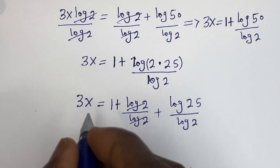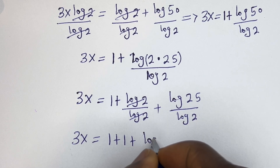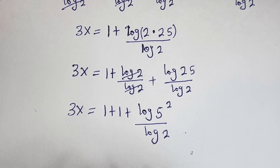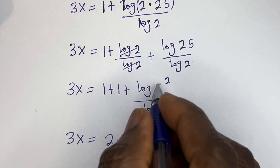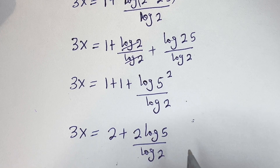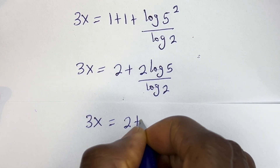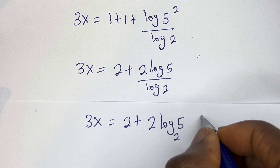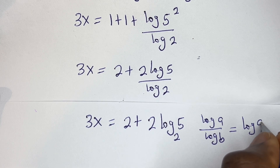This simplifies so that 3x is equal to 1 plus 1 plus 2·log 5 over log 2, which is 2 plus 2·log 5 over log 2. Using the change of base rule — if you have log A over log B, this equals log A base B — this becomes 3x is equal to 2 plus 2·log₂5.